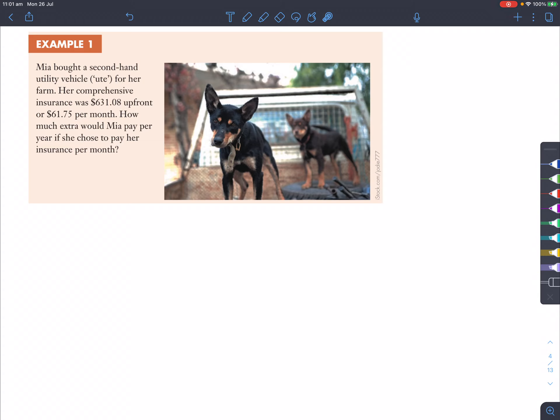Example one. Mia bought a second-hand utility vehicle, which is a ute, which is what these two dogs are sitting on, for her farm. Her comprehensive insurance, which basically covers everything, was this much up front or this much per month. How much extra would Mia pay per year if she chose to pay her insurance per month?